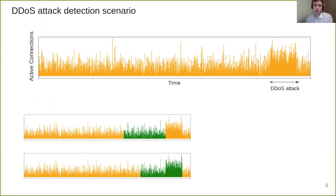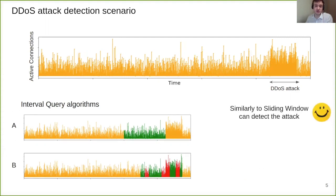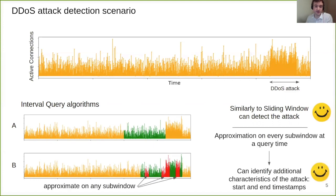This brings us to the interval query model which acts similarly to the sliding window model as it computes statistics only on the last N updates. However its inner structure can provide approximations on any subwindow specified at the query time. Thus we can identify events within the window. For instance we can define the beginning and the end of the attack or some kind of anomaly.